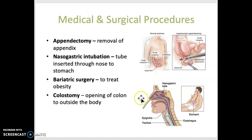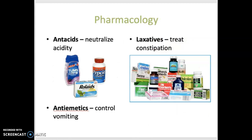Nasogastric intubation is when a tube is inserted through the nose to get into the stomach. This is used to relieve excess gas or to deliver medication, food, or fluids to the stomach. Bariatric surgery involves procedures used to treat obesity — gastric bypass decreases the stomach size, and a lap band restricts food consumption. A colostomy is a surgical procedure where an opening is formed from the colon to the exterior of the body. As for medications: antacids neutralize acidity, usually in the stomach, helpful if you're suffering from excess acid. Antiemetics help control nausea and vomiting. Laxatives are used to treat constipation by increasing the motility of the GI tract.